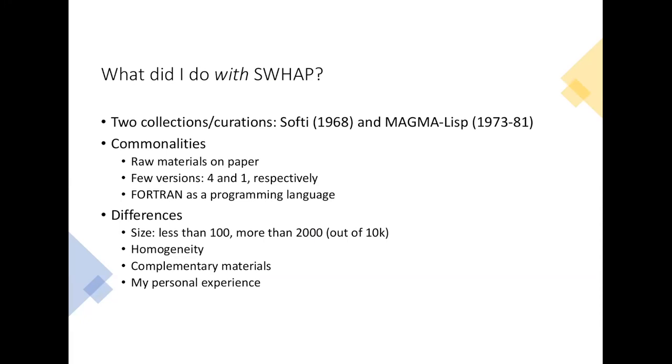These things have some commonalities and some differences. They have in common that in both cases the raw materials were on paper and that we had a few versions. Unfortunately for Softy, just one. They shared that they had FORTRAN as a programming language. The differences is that Softy is very small, less than 100 lines, while for MAGMA-Lisp I recovered about 2,000 lines out of the 10,000 lines of the whole system. They differ in homogeneity because Softy has, besides FORTRAN, also other languages.